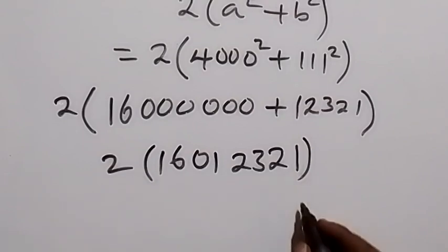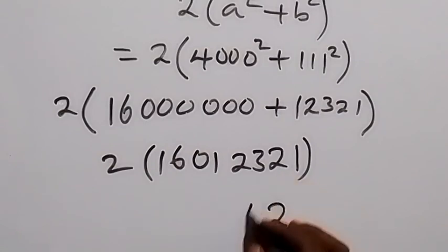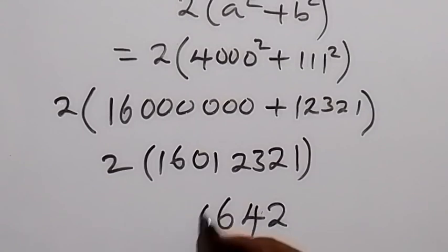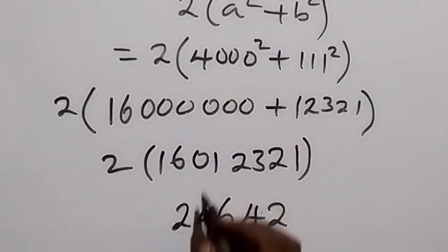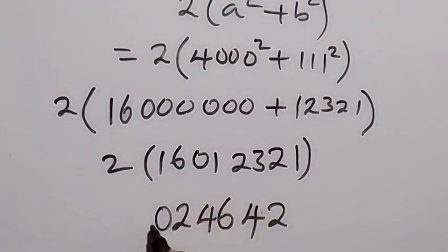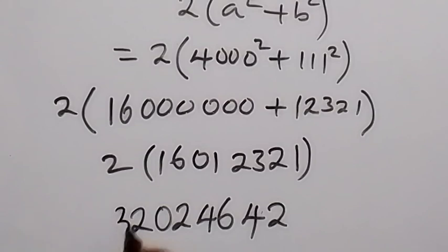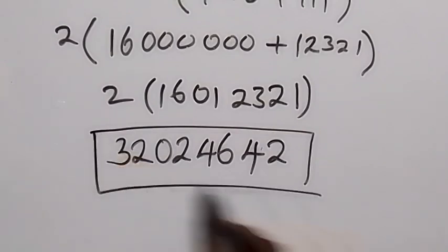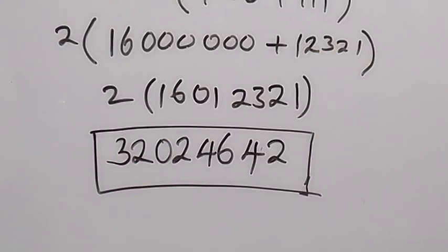Then multiply by 2. We multiply from the back: 2 times 1 is 2, 2 times 2 is 4, 2 times 3 is 6, 2 times 2 is 4, 2 times 1 is 2, 2 times 0 is 0, 2 times 6 is 12 — write 2 carry 1 — then 2 times 1 is 2 plus 1 is 3. So therefore the answer is 32,024,642. Thank you for watching, share this video and give a thumbs up, subscribe, see you in the next class!